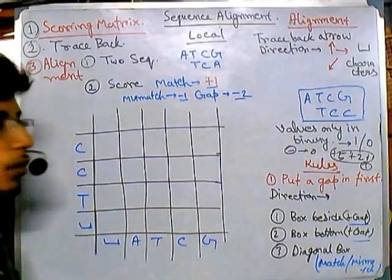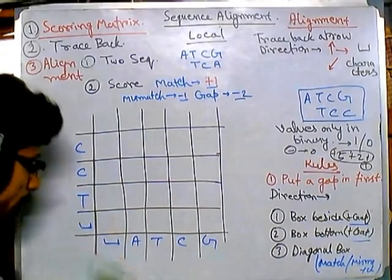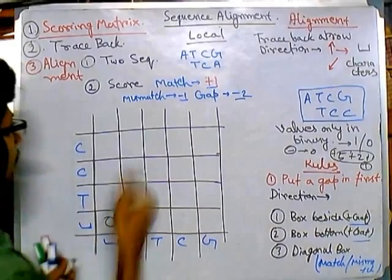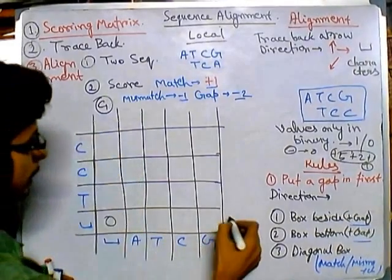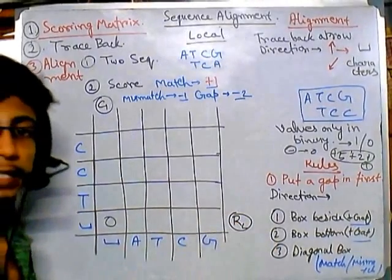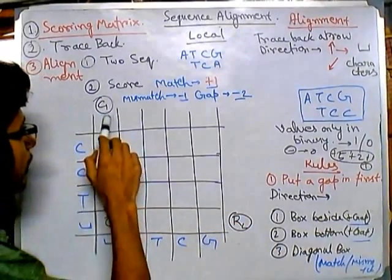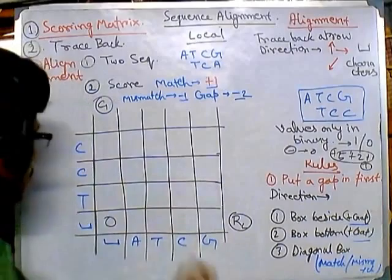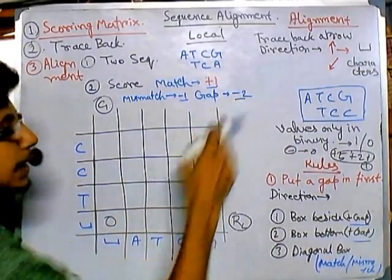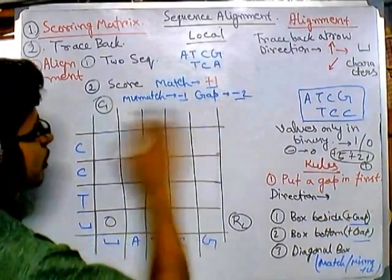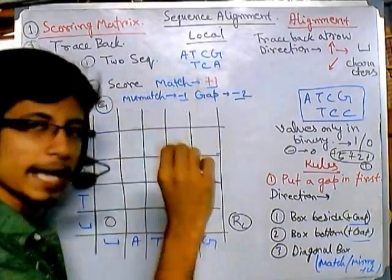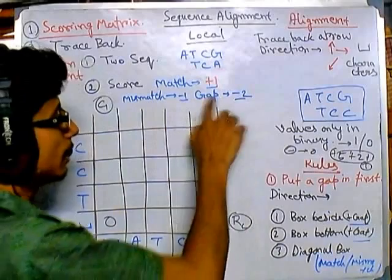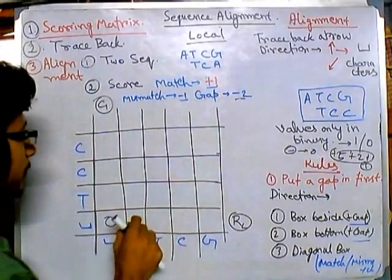Now we need to fill the matrix. Since both axes start from gaps, the first value is always 0. Remember: we must fill the first column and first row before anything else, because we cannot fill the rest of the boxes until those are done. The score board is: match = +1, mismatch = −1, gap = −2. We add gap values to get the values for the first column and first row.